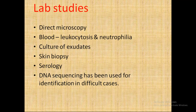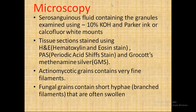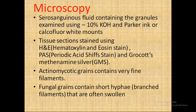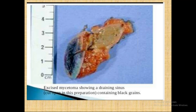Lab studies include direct microscopy of blood showing leukocytosis and eosinophilia, plus neutrophilia. Pus is examined for fungi or bacteria. Skin biopsy and PCR/DNA sequencing are used for identification in difficult cases. On microscopy, serosanguinous fluid containing granules is examined using 10% KOH, and calcofluor white mounts. Tissue sections are stained using H&E, PAS (periodic acid-Schiff stain), and Grocott's methenamine silver stains. Actinomycotic grains contain very fine filaments; fungal grains contain short, highly branched filaments that are often swollen.